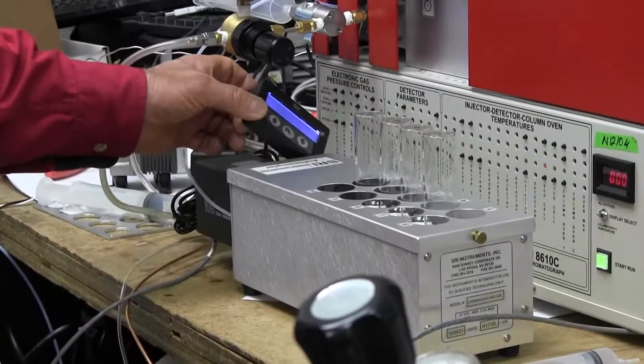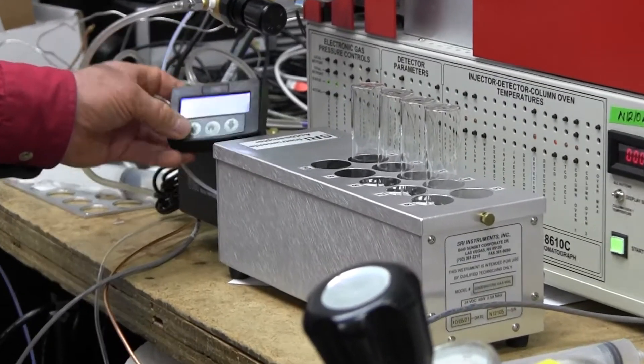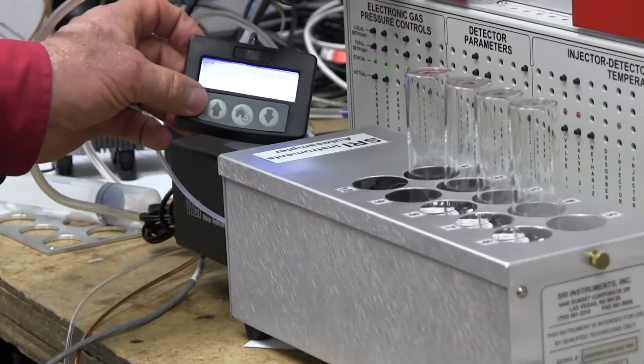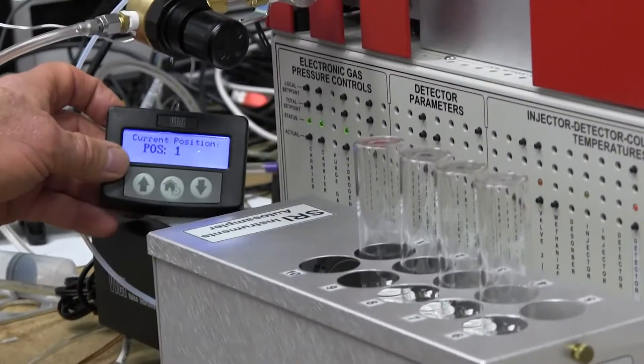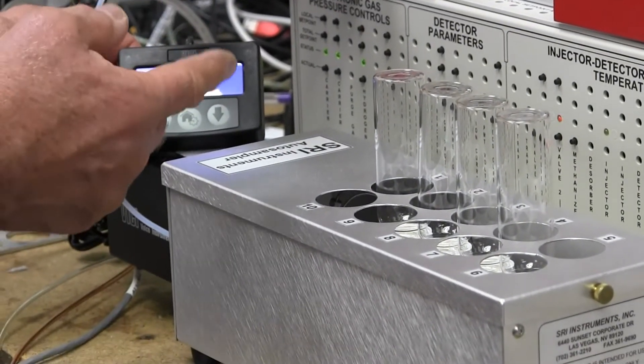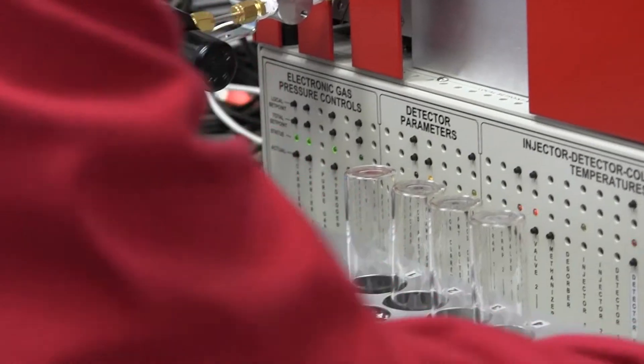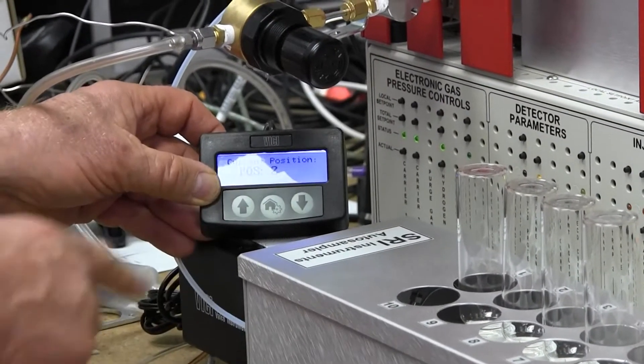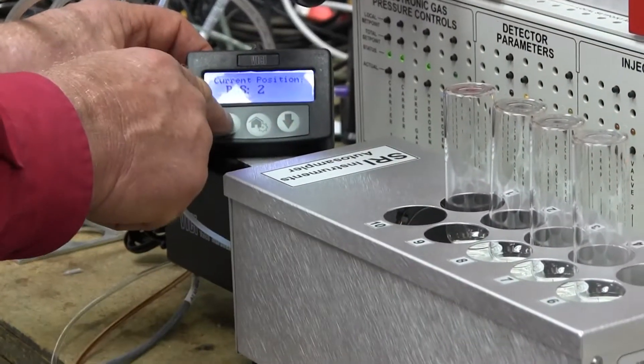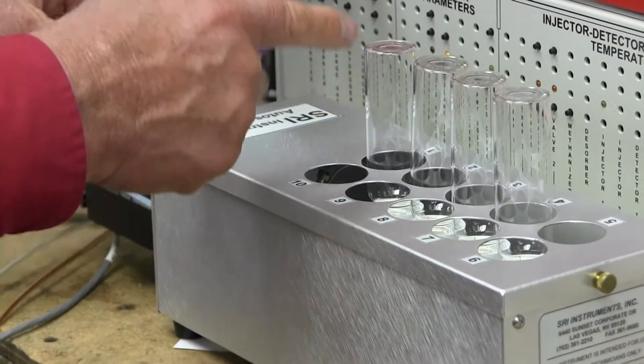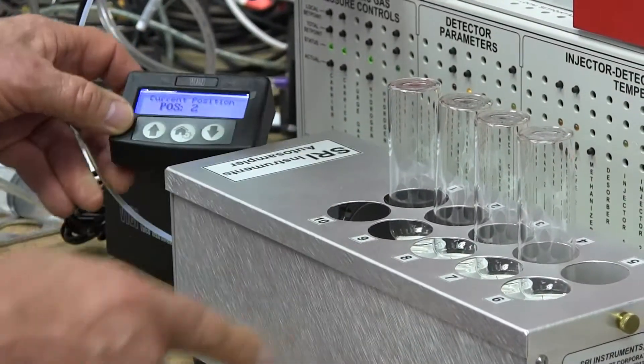I think we even have a video that shows how to do that. But now to control the position of this auto sampler, here's this little control box that shows the position. So right now it's showing position number one. And there's really only two things that can happen. A contact can close and make the position index by one. So by pushing this, I made it go from position number one to position number two.